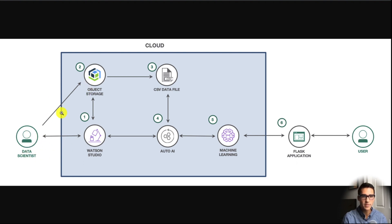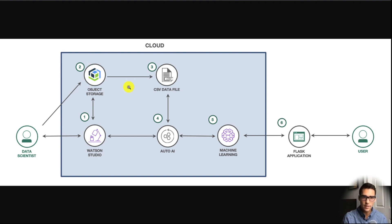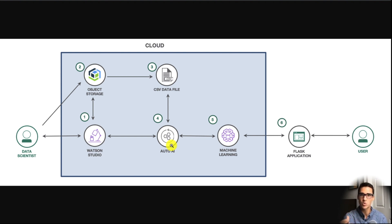As the data scientist, we basically create a Watson Studio instance within IBM Cloud. We create an instance of Object Storage, which is where we keep our dataset — and this is all completely free, no credit card required. You just have to sign up for an IBM Cloud account. The third step is we feed in the data file and then run an AutoAI experiment on it. AutoAI is going to run different algorithms and try to maximize and optimize for the metric we're going for — specifically, we're going to try to minimize the root mean squared error.